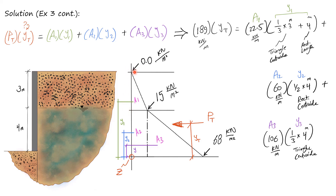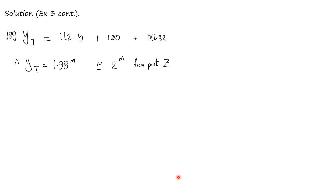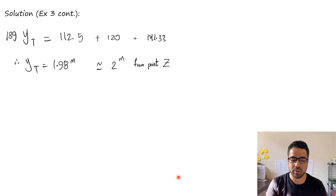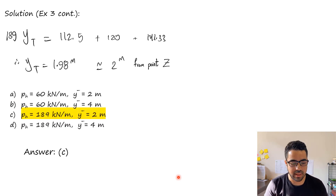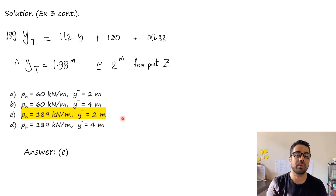It doesn't matter which reference point you choose, as long as you are careful with the mathematics. Doing the math gives us an arm for the total force of approximately 1.98 m — almost 2 m — from point Z. Since the total force is 189 kN/m and ȳ ≈ 2 m, that gives us Option C. Thank you very much, and see you next time.